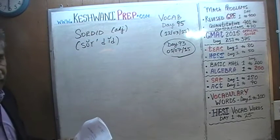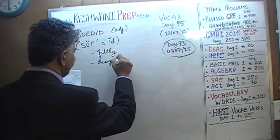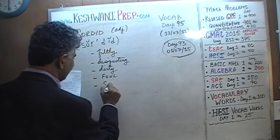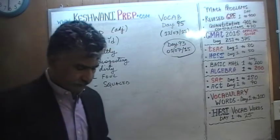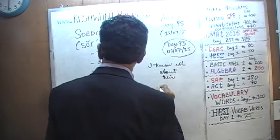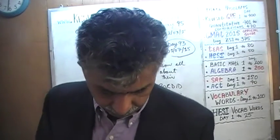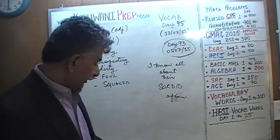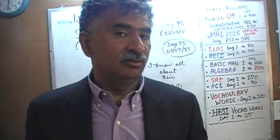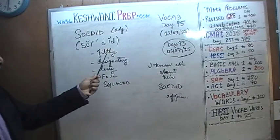What does sordid mean? Exactly what we just said. It means filthy, disgusting, something that is dirty, something that is foul, something that is squalid. For example: 'I know all about their sordid affair.' Not only do you know all about it, but you express a strong opinion — you've described it as a sordid, filthy, disgusting affair. The word is sordid: dirty, foul.